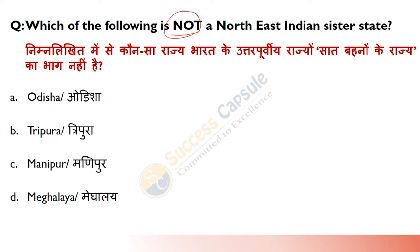Which of the following is not a North East Indian sister state? Answer is A — Odisha. This is a very easy question. The North East states are Assam, Arunachal, Sikkim, Nagaland, Mizoram, Meghalaya, Tripura, and Manipur. So Odisha is not a part of the North East Indian sister states.